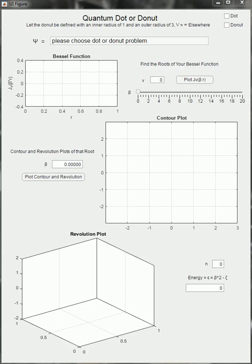We're going to start with the quantum dot problem, which is just a free particle, zero potential. So we're going to select dot. This gives us what our wave equation is going to look like.